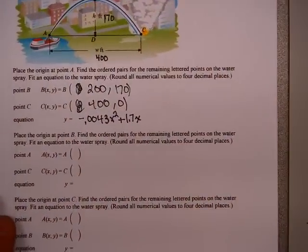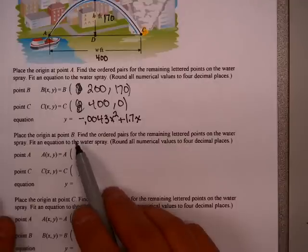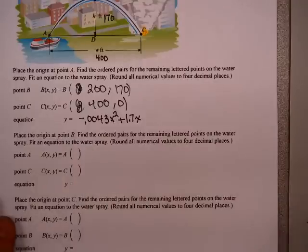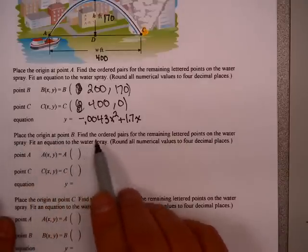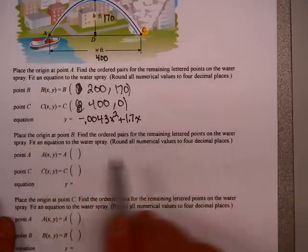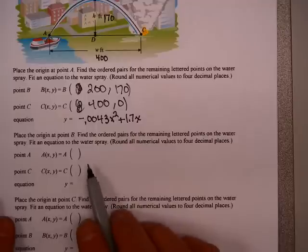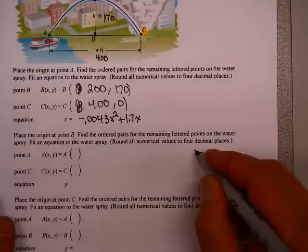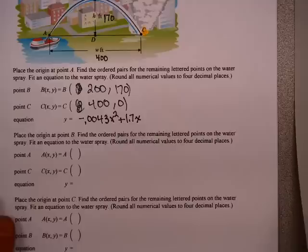Now, we're going to do another problem. I'm going to ask you to do it, and what I'd like you to do after we read the problem is hit the pause button, and then I will solve it for you when you're ready. Okay, so let's look at this one. Place the origin at point B. Find the ordered pairs for the remaining lettered points on the water spray. Fit an equation to the water spray. Round to four decimal places. Okay, so why don't you hit the pause button now, and then we can do this problem together.